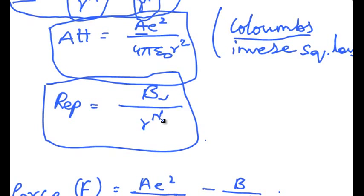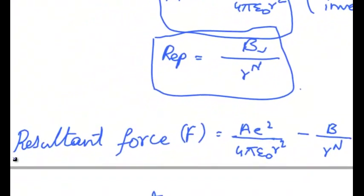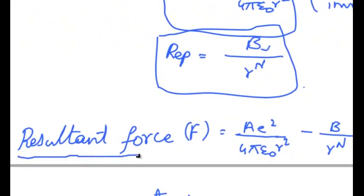So the resultant force is F is equal to a e square by 4 pi epsilon not into r square minus b by r power n, that is attractive force plus repulsive force.